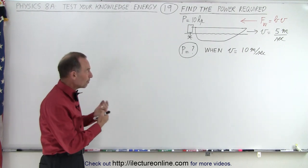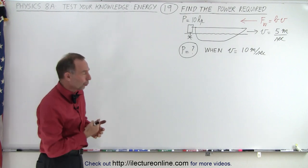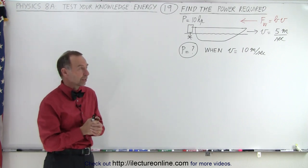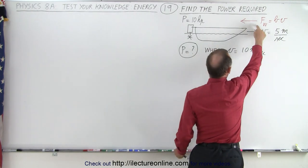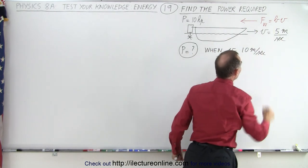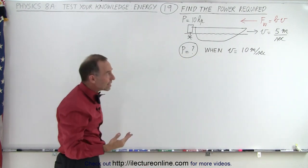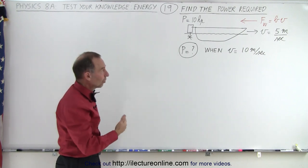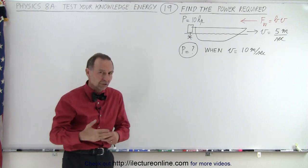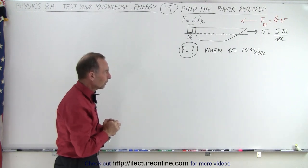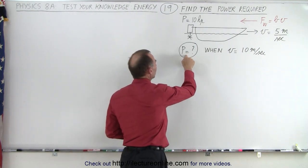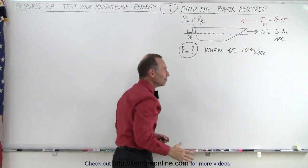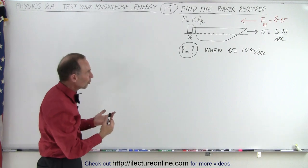We have a boat with an engine that has variable horsepower. When the engine applies 10 horsepower, the boat moves at 5 meters per second, keeping in mind that there is a resistance force from the water equal to some constant b times velocity. In other words, if we double the velocity we have double the resistance, if we triple the velocity that's triple the resistance. We're asking: what is the power requirement if the velocity doubles from 5 meters per second to 10 meters per second?